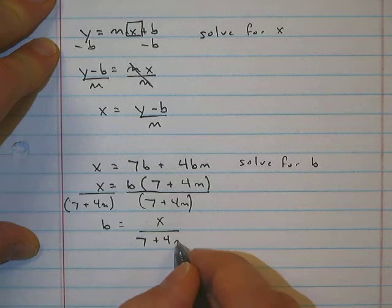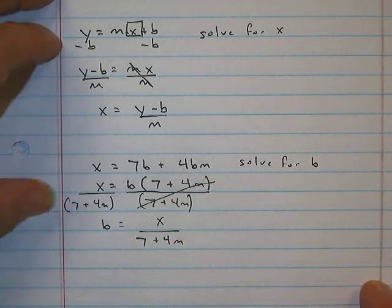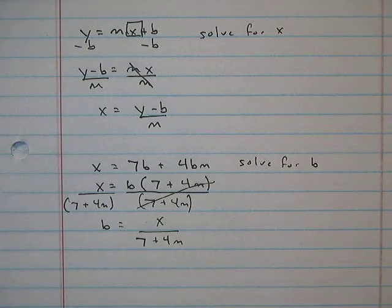I'm going to switch that, which means b equals x divided by 7 plus 4m, because those cancel out. That's just a quick tutorial on literal equations. I hope that helps.